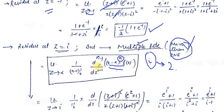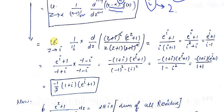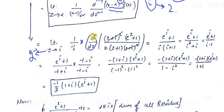Since n = 2, we differentiate one time and divide by 1! (one factorial). The formula becomes: limit as z → i of d/dz [(z−i)² · f(z)]. The (z−i)² terms cancel with the denominator. We then differentiate the remaining function e^(z+1) / [z·(z+1)] using the quotient rule (u/v method).